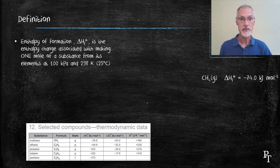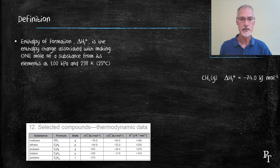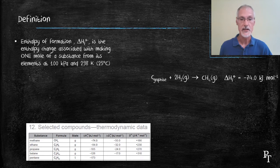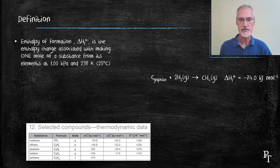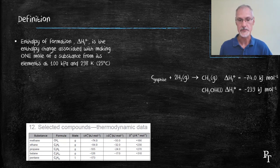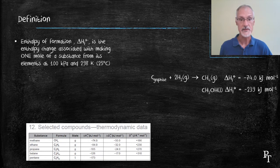To make methane from its elements at room temperature and pressure, we require both carbon and hydrogen. Carbon typically exists as graphite or carbon solid, and hydrogen is diatomic, and the coefficient 2 is needed to balance the equation. Another substance that's a little further down on the table, you can't quite see it here, is the substance methanol, and it's also an exothermic reaction.